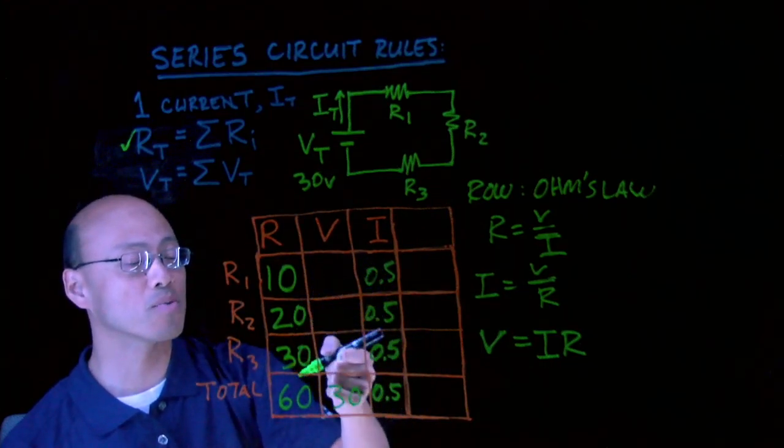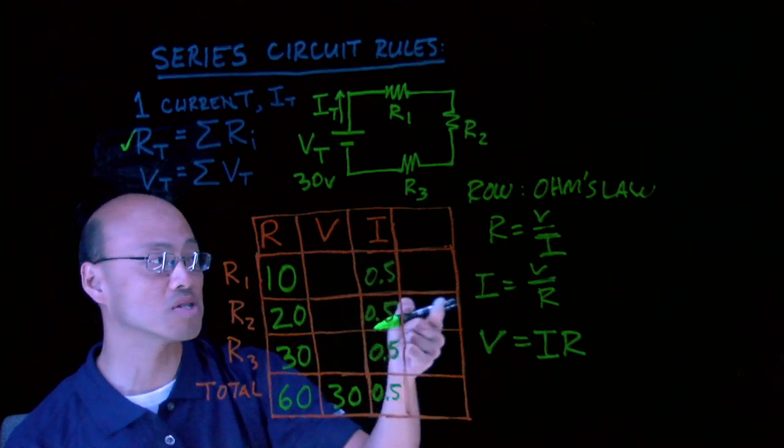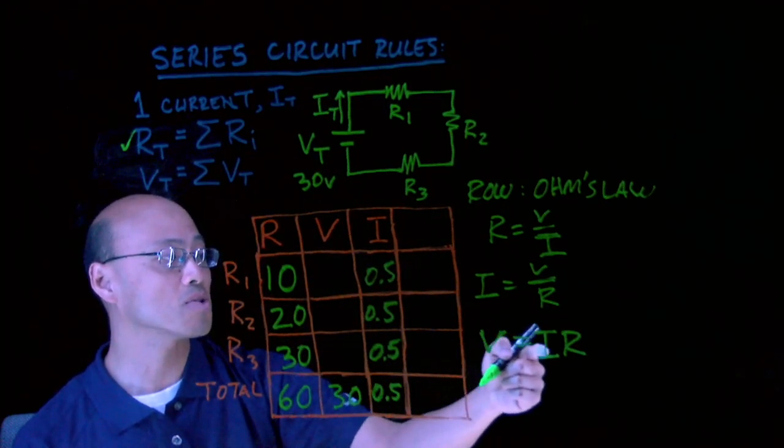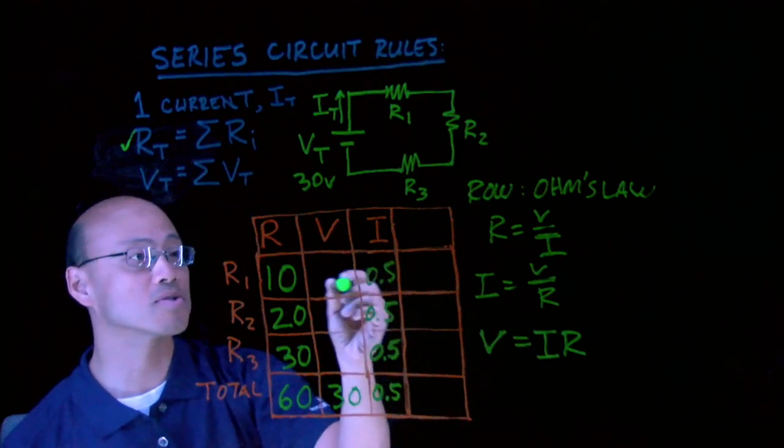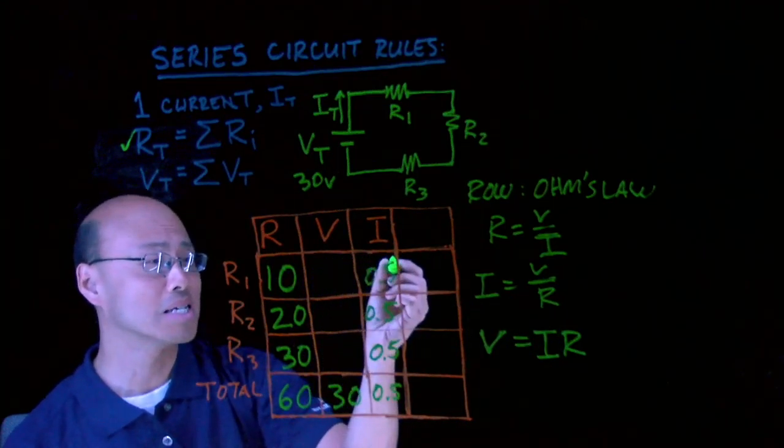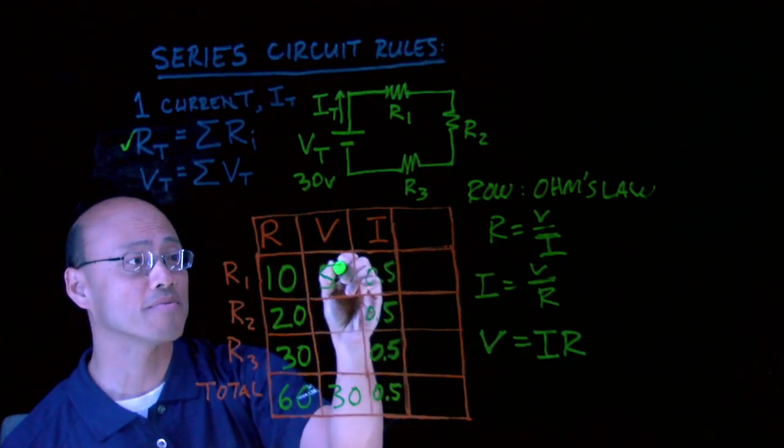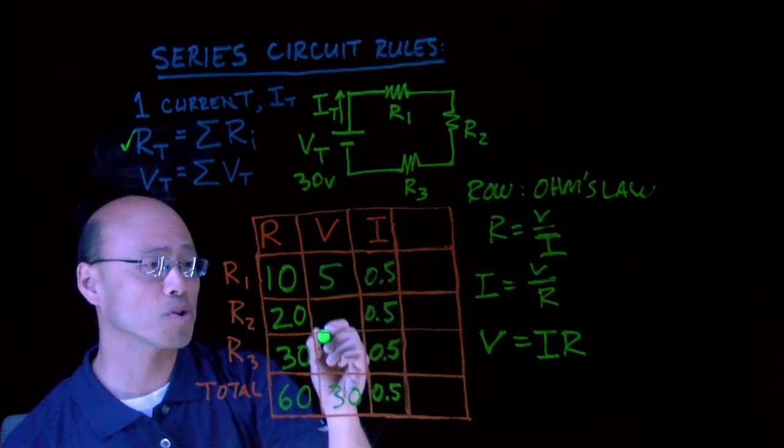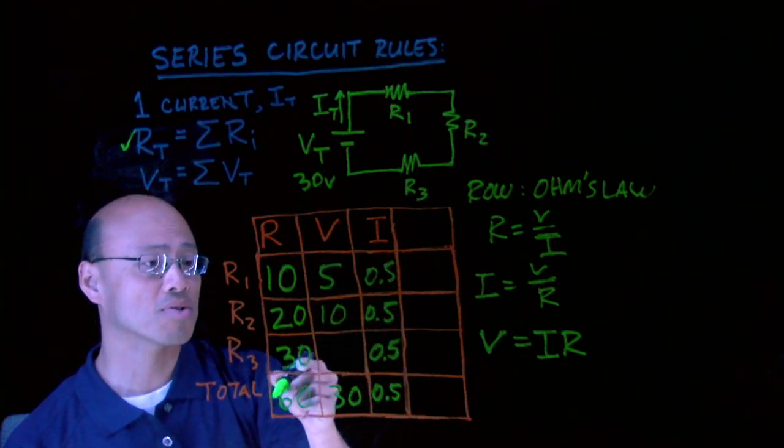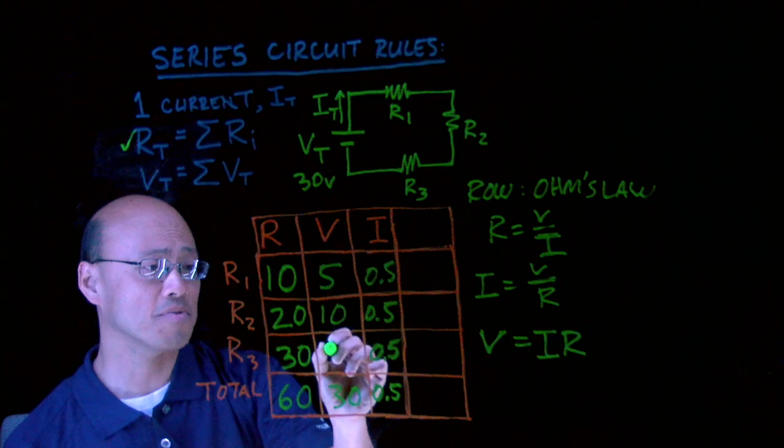So, now I've only got one box empty in each row, and you can see I would just use Ohm's Law over and over again. V equals I times R, right? So, this is 10 times 0.5. That's what? 5, 5 volts there. 20 times 0.5, 10 volts there. 30 times 0.5, 15 volts.